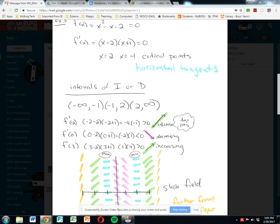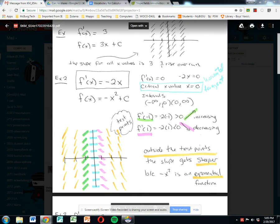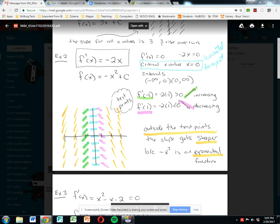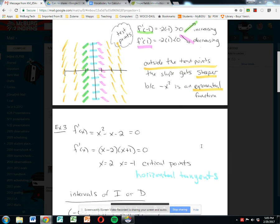So there's your idea of slope fields. We might take a look at one that has both x and y in it, but I'll probably use a Khan Academy video for that. Thanks.